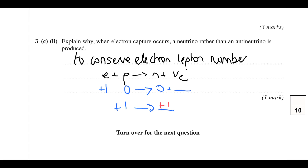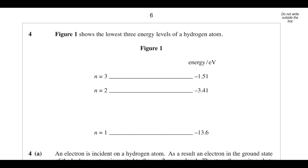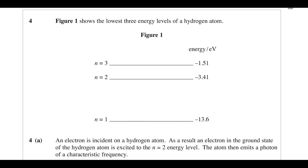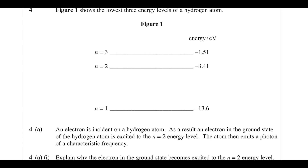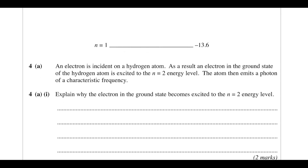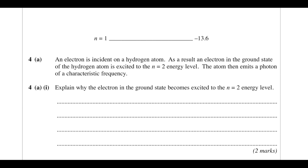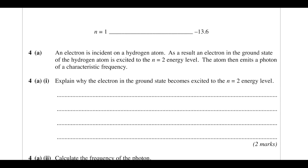That finishes question three. Looking at some atomic energy level stuff — we've got the lowest three energy levels of hydrogen. These numbers should be fairly familiar, like ground state being −13.6 eV. An electron is incident on the hydrogen atom and as a result an electron in the ground state is excited to n = 2.